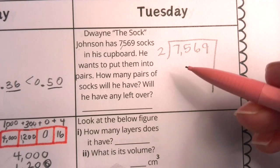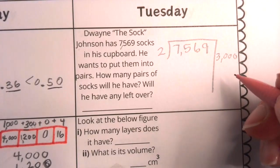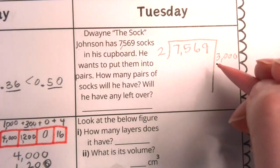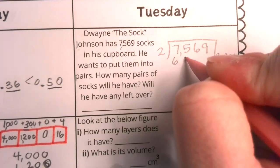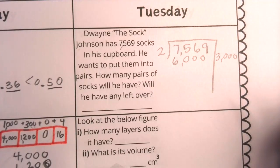But I can go even bigger here. What about if I start with taking 3,000 groups of two socks? Well, two times three is six. So two times 3,000 is 6,000.